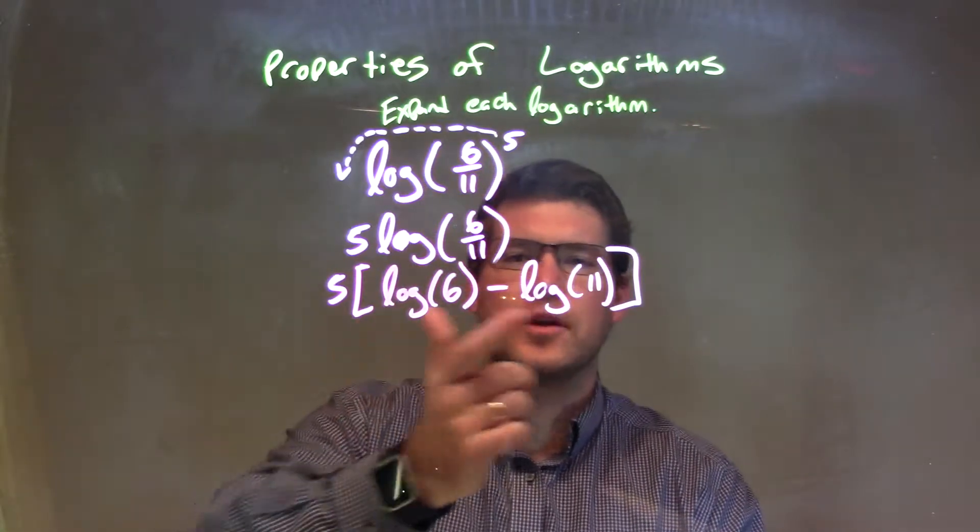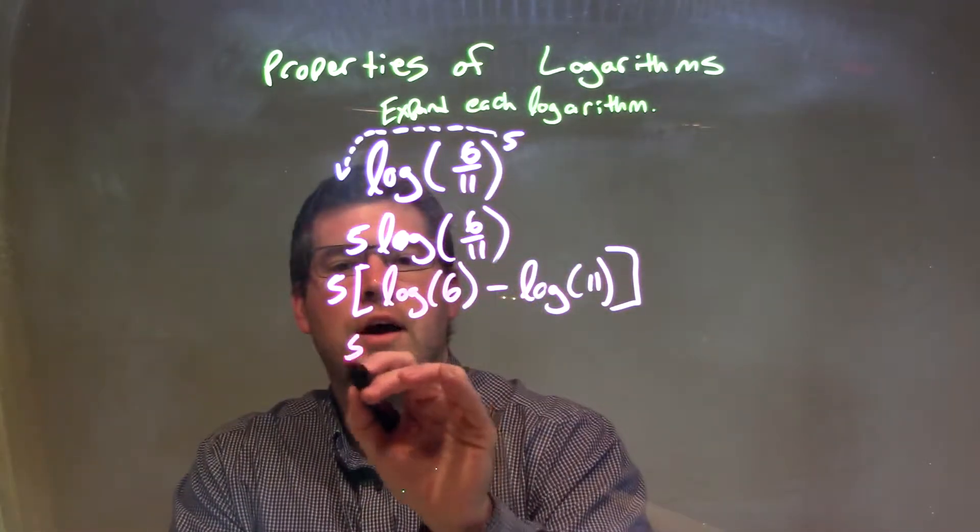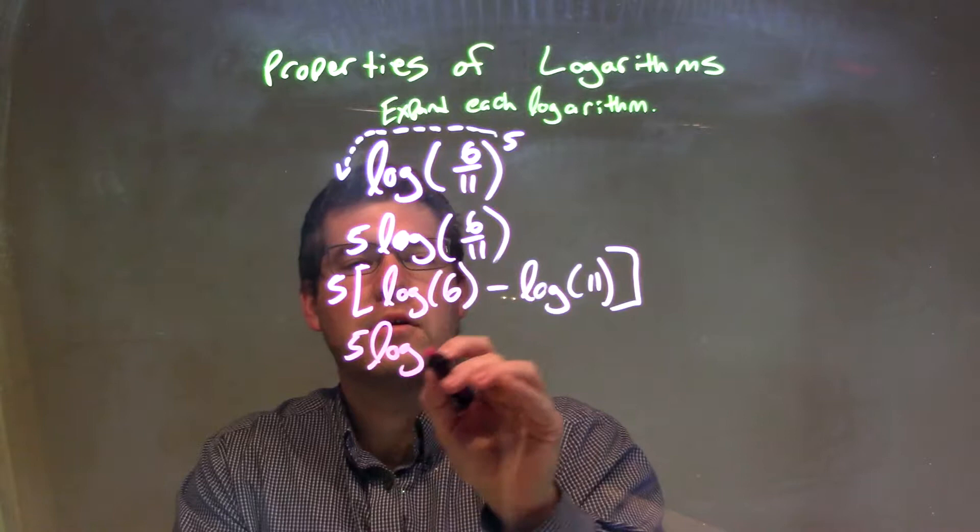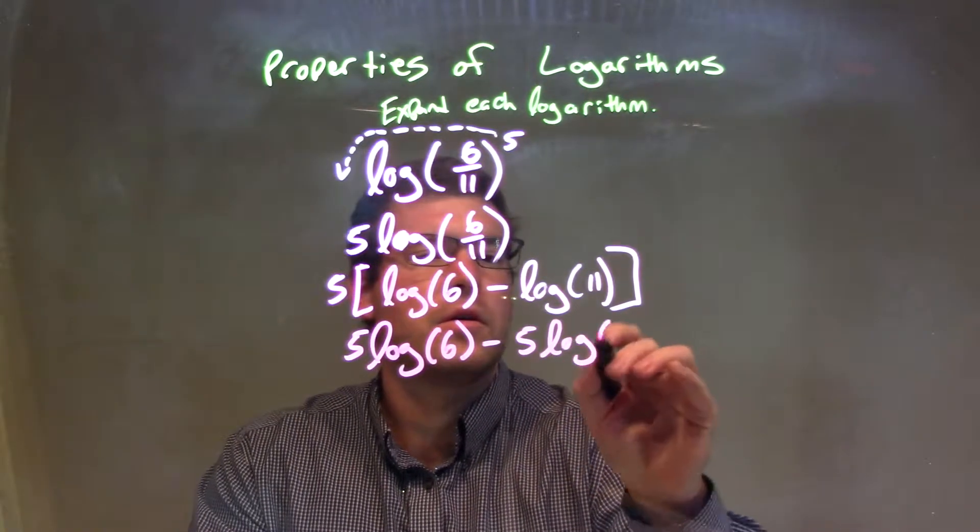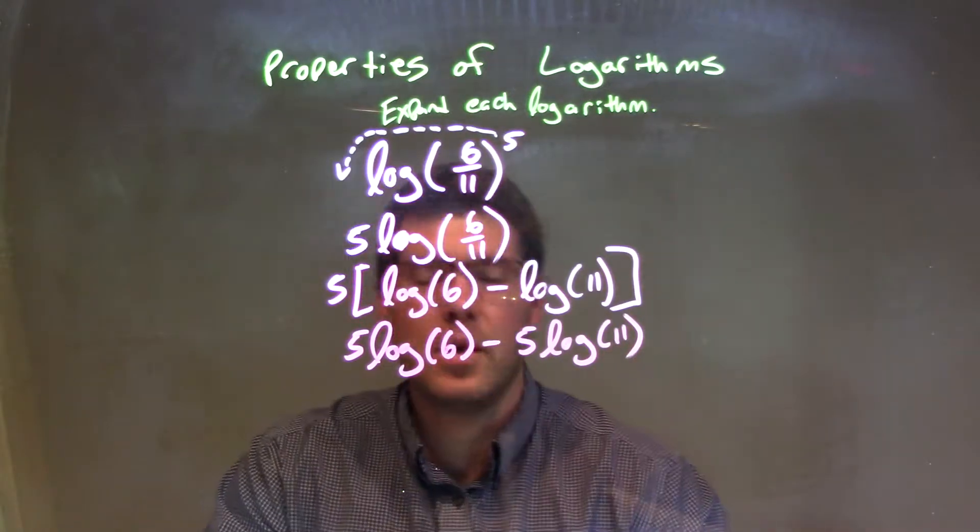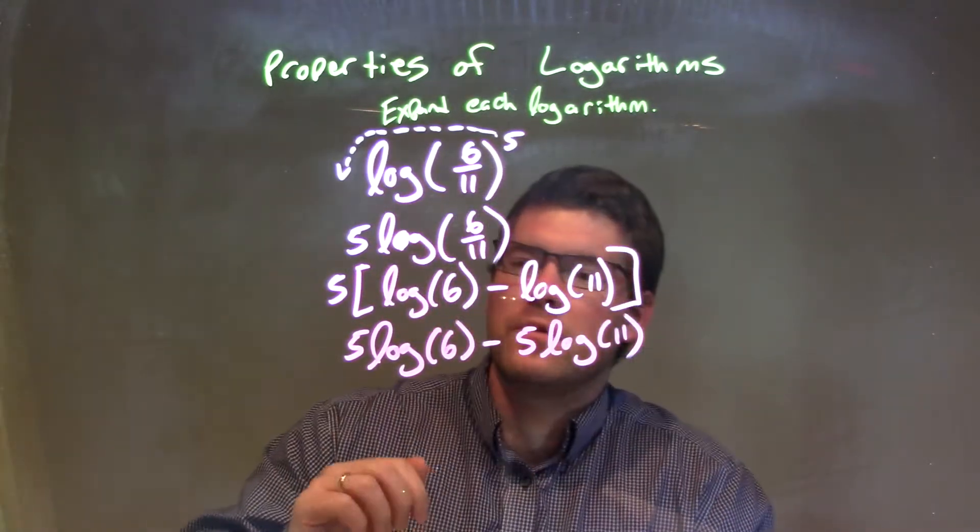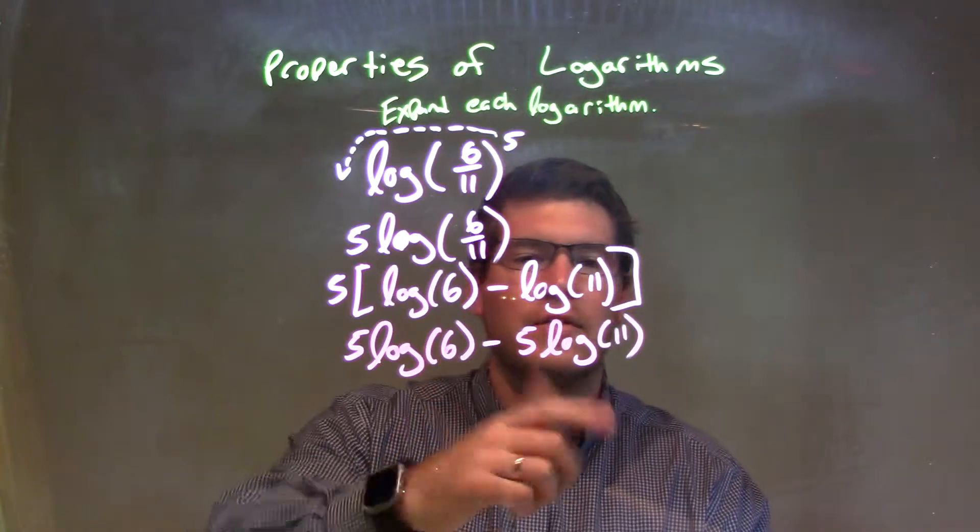So we have 5 times parentheses, or brackets here, log of 6 minus the log of 11. Well, that 5 we should really distribute to both parts. That's 5 log of 6 minus 5 log of 11. And there we go. Our final answer here just being 5 log of 6 minus 5 log of 11.